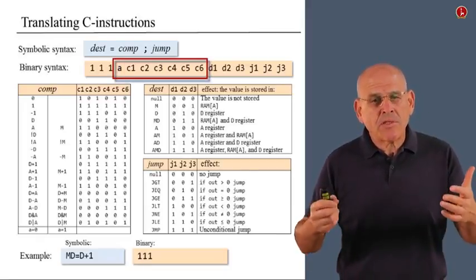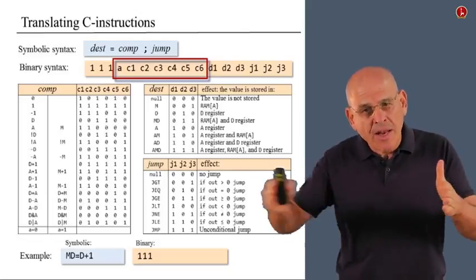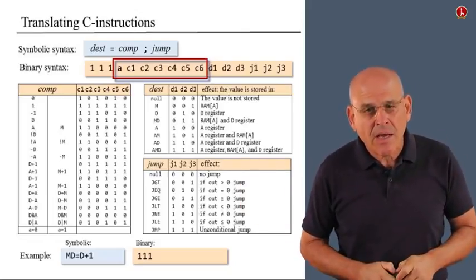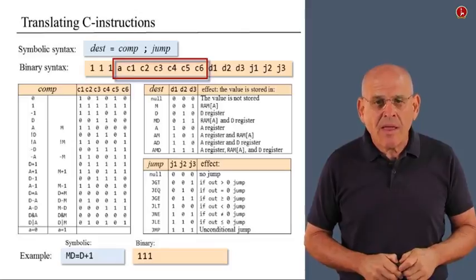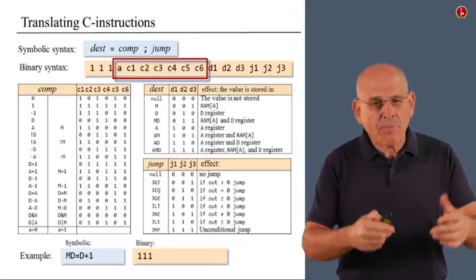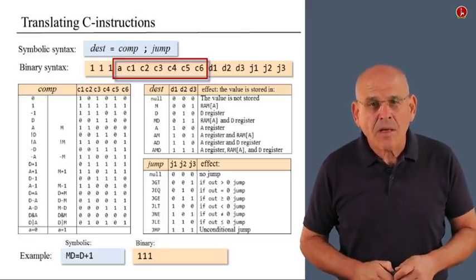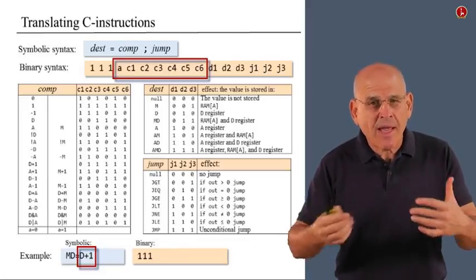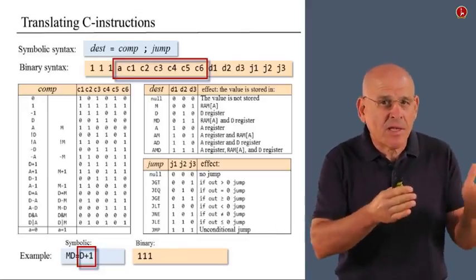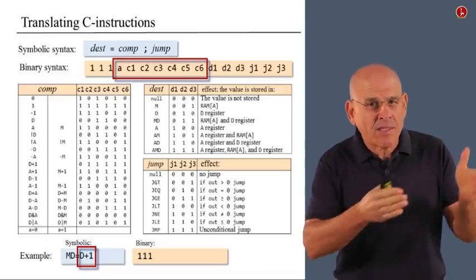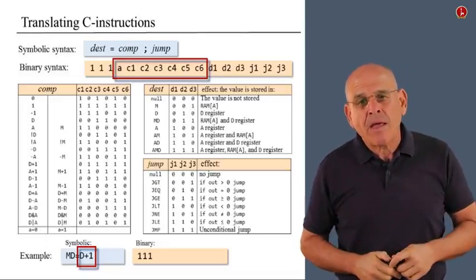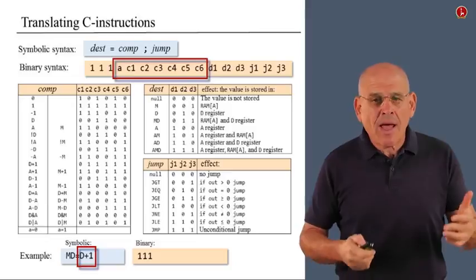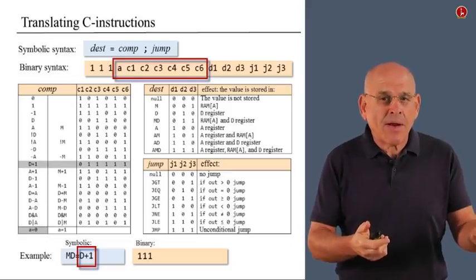Next, we focus on the next seven bits that we have to create. And these seven bits correspond to the comp field. Now, the comp field happens to be D plus 1. Once again, I assume that I have access to this field. I can easily retrieve it. I see that it's D plus 1. And if it's D plus 1, I can look it up in the relevant table.